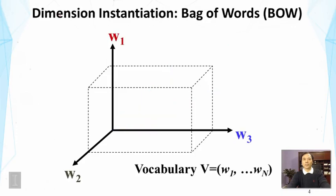Let's think about the simplest ways of instantiating this vector space model. First, how do we define the dimensions? The obvious choice is to use each word in our vocabulary to define a dimension. If there are N words in the vocabulary, there are N dimensions — each word defines one dimension. This is basically the bag of words representation.